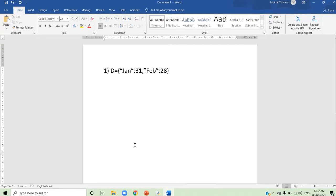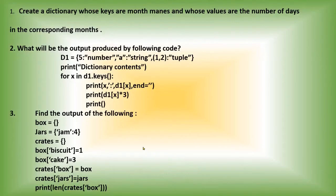Now we can see the second question: what will be the output produced by the following code? This is a dictionary question — you have to find the output of this code. See the dictionary: 5 is the key and its value is 'number'.